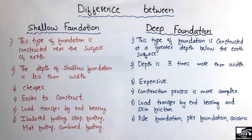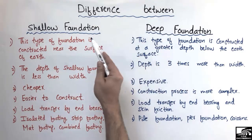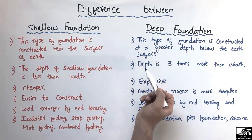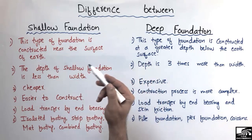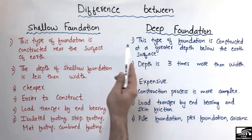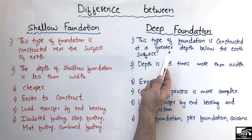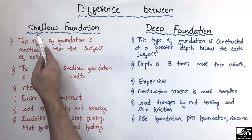Hello guys, welcome back to the Civil Engineering YouTube channel. Please subscribe to our channel for civil engineering videos. Today our lecture is about the difference between the shallow foundation and deep foundation. These two are the main types of foundation, while all other types — for example, isolated or column footing, strip footing, pile foundation — all come under the category of these two types of foundation.